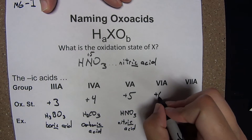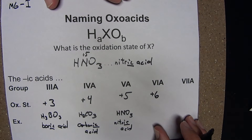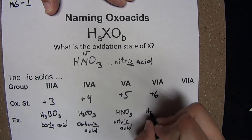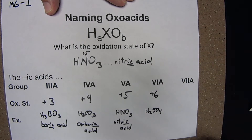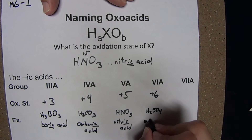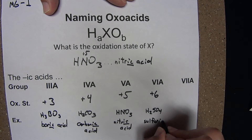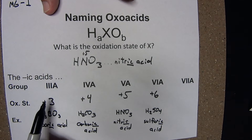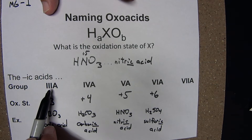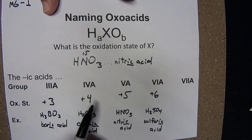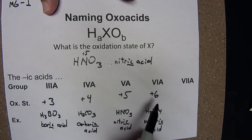When X is from group 6, the oxidation state for the ic acid is plus 6. A classic example: H2SO4. The oxidation state of that sulfur is plus 6, which makes this the ic acid — this is sulfuric acid. So we've seen: group 3A ic acid is plus 3, group 4 plus 4, group 5 plus 5, group 6 plus 6.